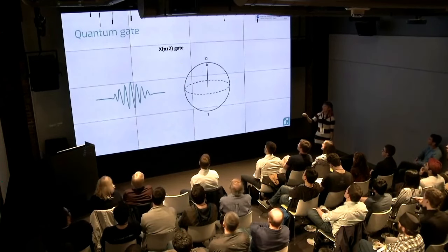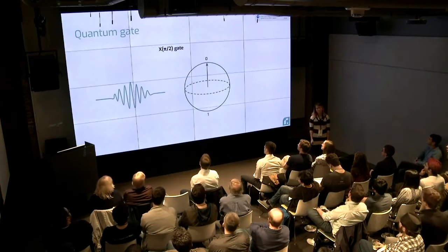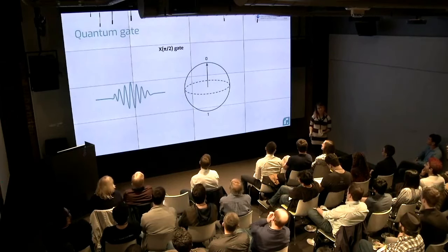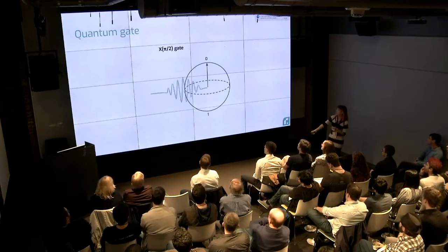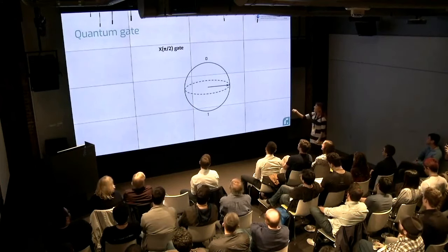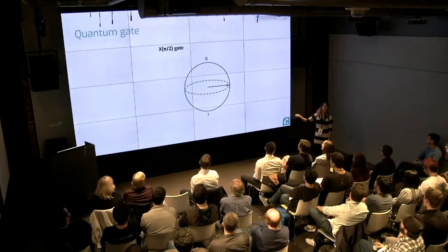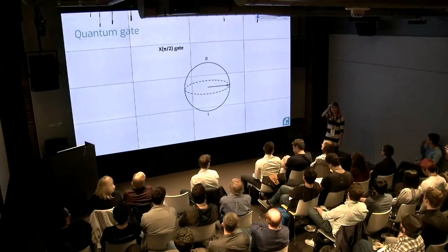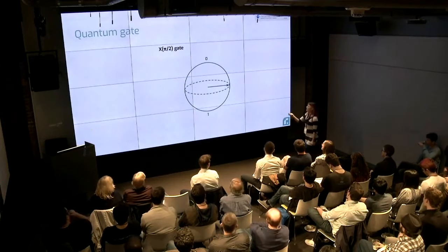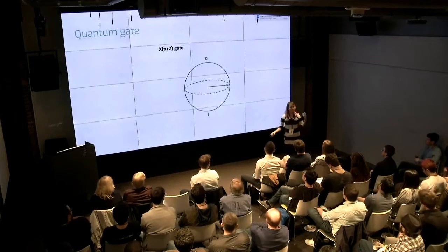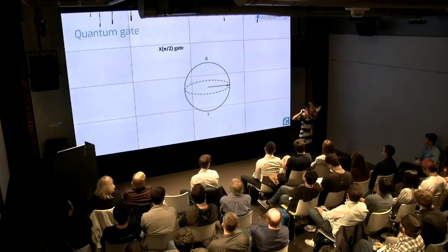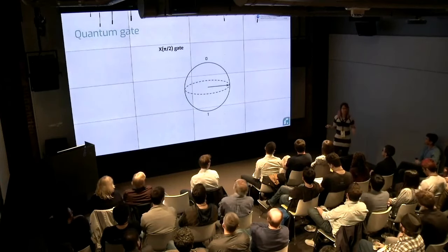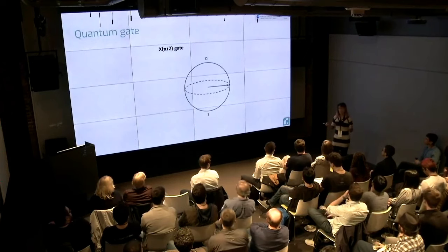We can do something really cool: we can take the same pulse, take half of the amplitude, and send it again. Now it's only going to rotate halfway. So this actually happens on the chip — this state goes into this in-between position. You may say, is it zero, one, or am I going to measure 0.5? No — you're actually going to measure zero or one.